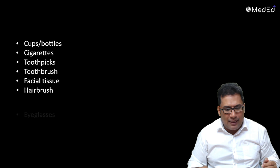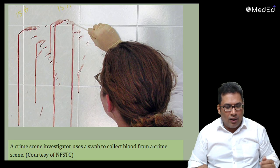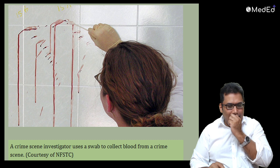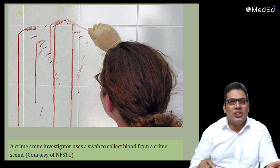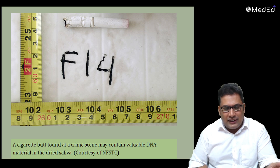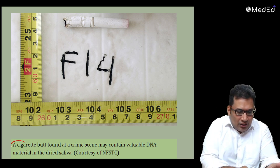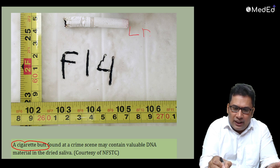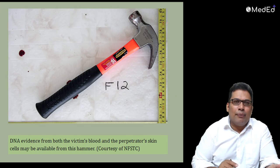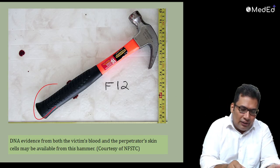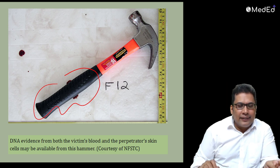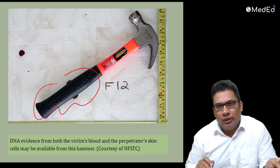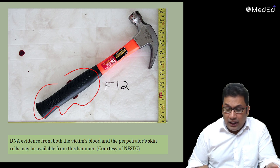Some examples from a crime scene investigation: a swab collected from a blood stain at the crime scene; a cigarette butt found at the crime scene which can be used for DNA analysis; a hammer - usually the handle of the hammer consists of some DNA material related to the crime and the accused.